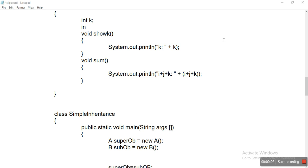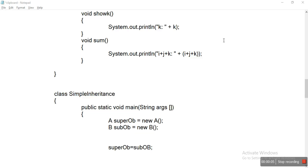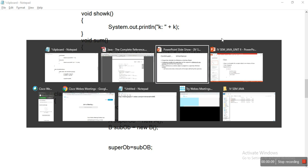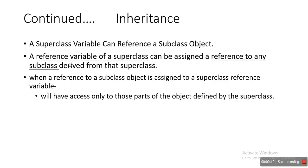Now we are discussing how to assign the subclass object to a superclass. A superclass variable can reference a subclass object. That is, the reference variable of a superclass can be assigned to a reference variable to a subclass derived from that superclass.